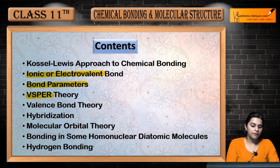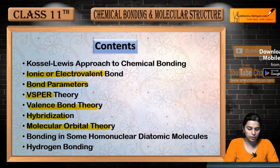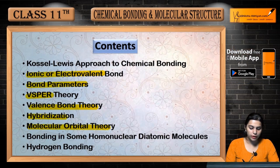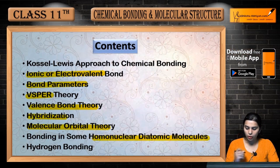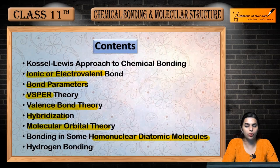Then we have VSEPR theory, valence bond theory, hybridization, and molecular orbital theory — which you also call MOT — and bonding in some homonuclear diatomic molecules. Homonuclear means the same type of atoms, and diatomic means the molecule is made from two atoms.